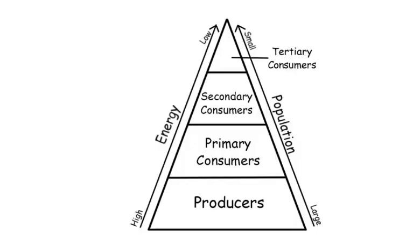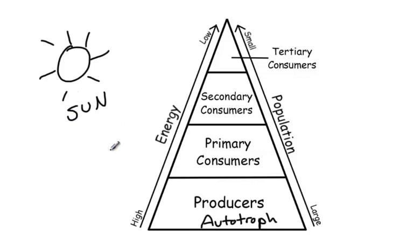Let's start with the energy pyramid. At the bottom we have the producers. Producers are also known as autotrophs. Producers or autotrophs are able to get their energy from the sun through the process of photosynthesis. There's more energy found in the energy pyramid in the producer section than there is in the rest of the energy pyramid.